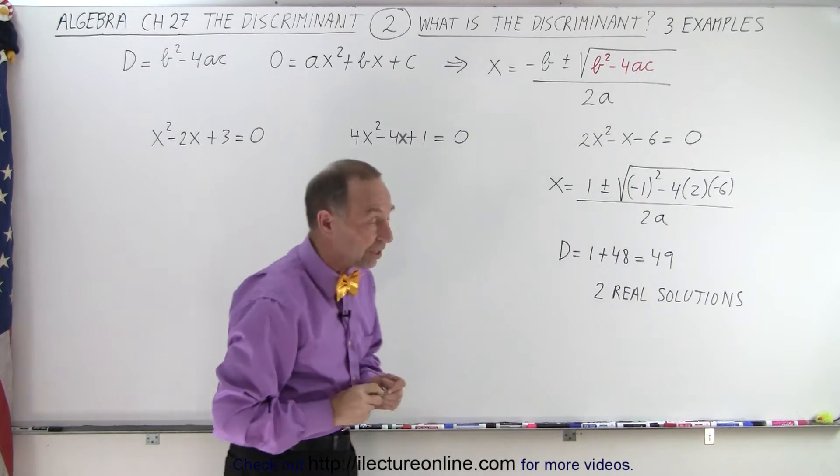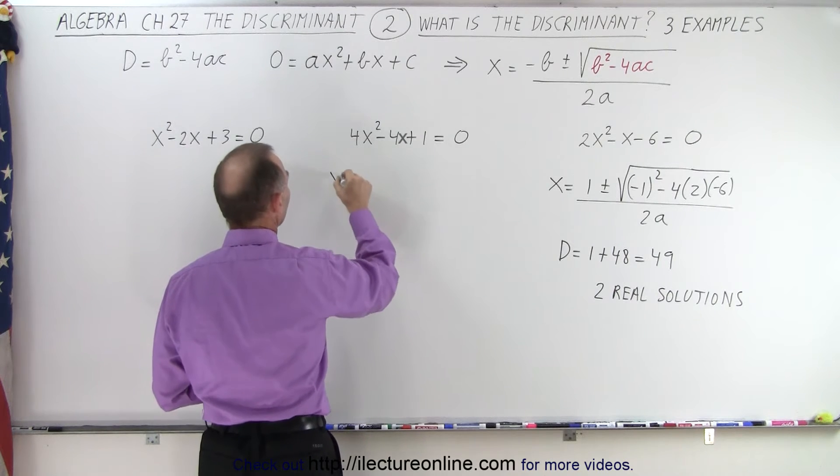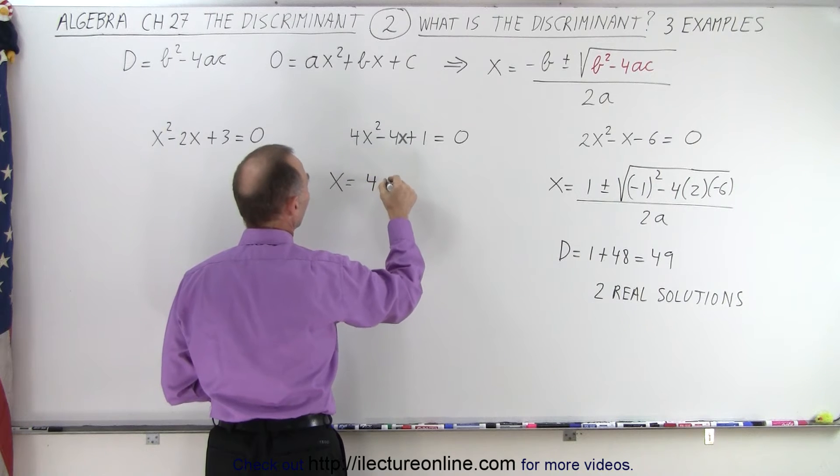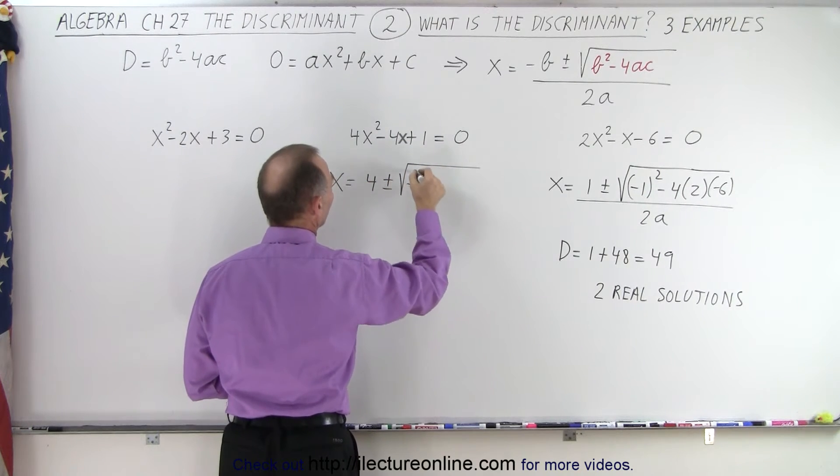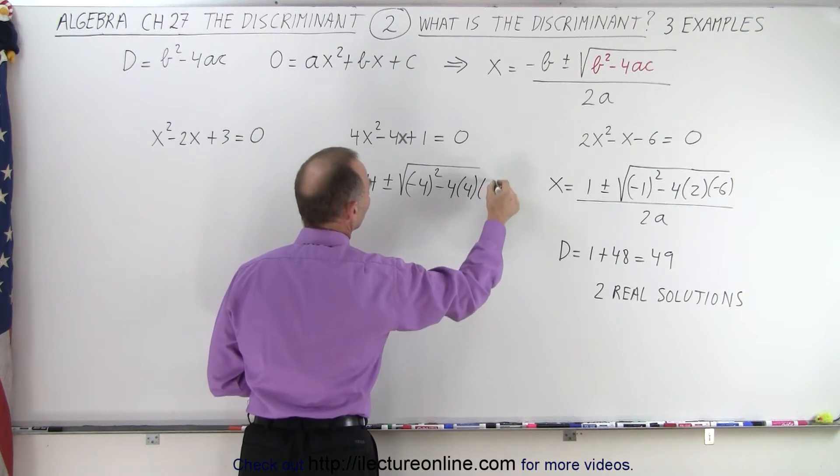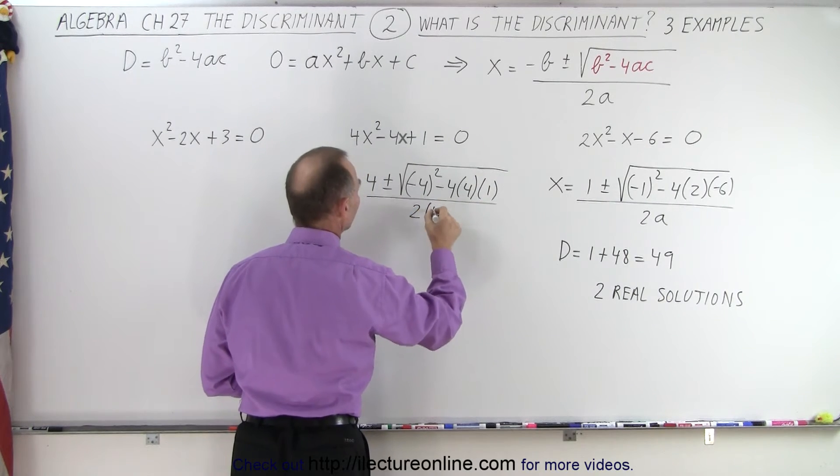Let's go to our second equation. Again, we plug that into the quadratic formula: x equals -b, which is positive 4, plus or minus the square root of b², which is (-4)², minus 4 times a times c which is 1, the whole thing divided by 2a, which is 2 times 4.